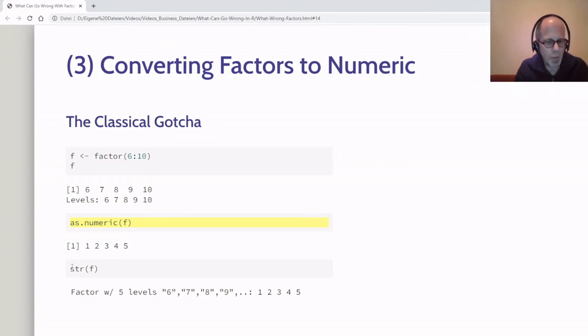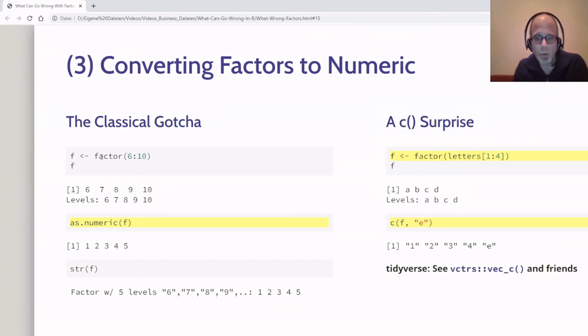When we want to understand why this happens, the str function may help. We can look at the structure of this factor, and it shows it's a factor with five levels starting at 6. But here on the right end of the output we see the factor levels are internally coded with numbers, and these numbers always start with 1. It turns out the as.numeric function uses this internal coding to return these numbers, not the numbers we expected. So how can we avoid this error? I'll show that on the next slide, but I may surprise you. I think this is maybe better known in the R community, but I have a second issue where a similar problem can come up, and that is the C function can surprise you in some cases. This example is a little bit different.